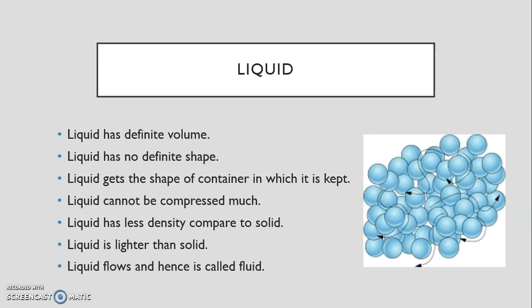Liquids. Liquid has definite volume, liquid has no definite shape, liquids get the shape of the container in which it is kept, liquid cannot be compressed much, liquid has less density compared to solid but more density than gas, and liquid is lighter than solid but heavier than gas, and liquid flows, hence it is called a fluid. It does have a definite volume, this means you can't add to it like a solid. And liquid has no definite shape, so liquid particles are not stuck in one place. They can all flow, they can all go wherever they want, making different shapes or fitting different containers.